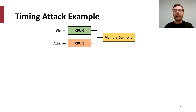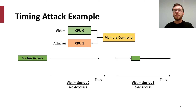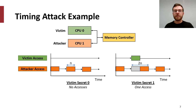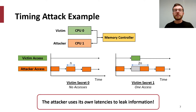Let's take a more concrete look at how memory controller side channels can leak information. Imagine a scenario where there is an attacker and a victim on separate cores, both sharing the same memory controller. Depending on some Boolean secret, the victim will have a different DRAM access pattern: if the secret is 0, it performs no DRAM accesses, while if the secret is 1, it accesses DRAM once. While an attacker cannot directly observe the victim's accesses, it can access DRAM at regular intervals and observe whether any of its own memory accesses are delayed, thereby discerning the victim's access pattern and determining the secret.